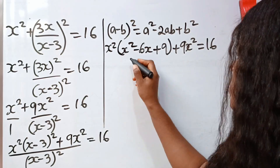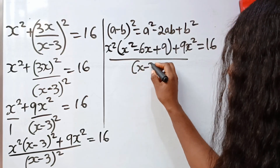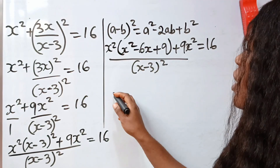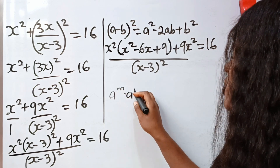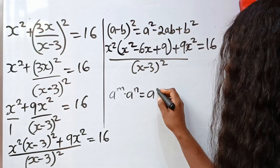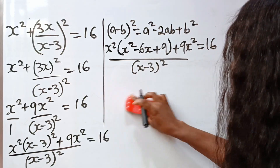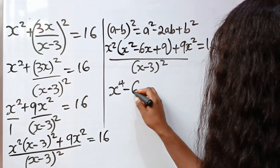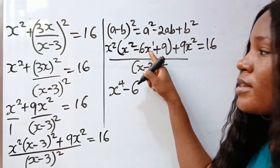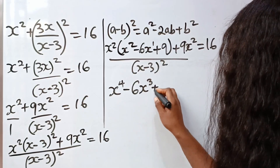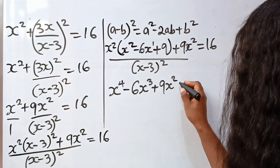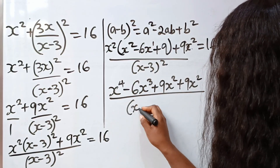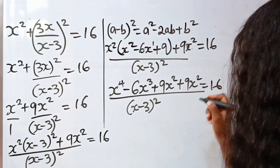Now let us open this bracket. Remember everything is over x minus 3 squared. If we do that, x squared times x squared — remember that a to the power of m multiplied by a to the power of n is equal to a to the power of m plus n — so this will be x to the power of 4, minus 6x to the power of 3, plus 9 times x squared is 9x squared, plus 9x squared. Everything divided by x minus 3 squared is equal to 16.